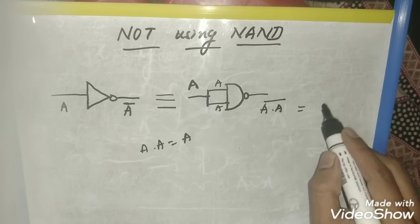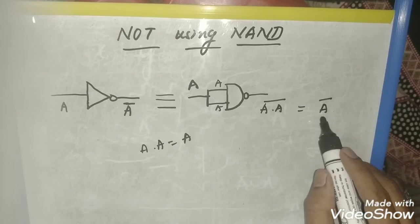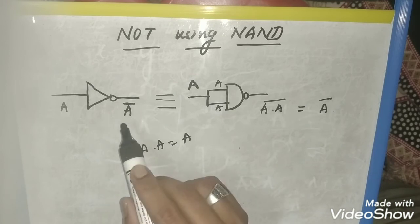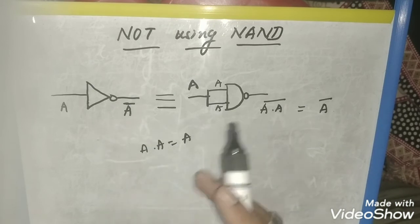Therefore, we can write A dot A as A. So it will be A bar, which is the same output of the inverter, that is the NOT gate. This is how we convert the NOT using NAND gate.